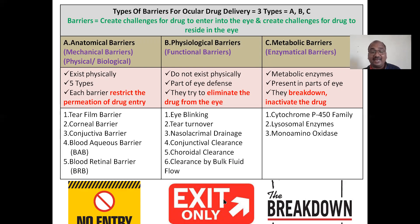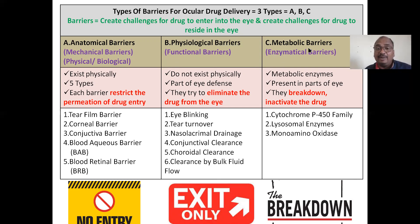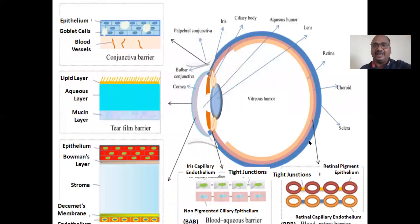Physiological barriers try to exit the drug from the eye — they try to push out or kick out the drug. These are functional barriers; they do not exist physically. They are part of the eye's defense system: eye blinking, tear turnover, nasolacrimal drainage, conjunctival clearance, and clearance by bulk fluid. Metabolic barriers are the enzymes — they try to break down the drug molecule, like cytochrome P450 family, lysosomal enzymes, and monoamine oxidase.